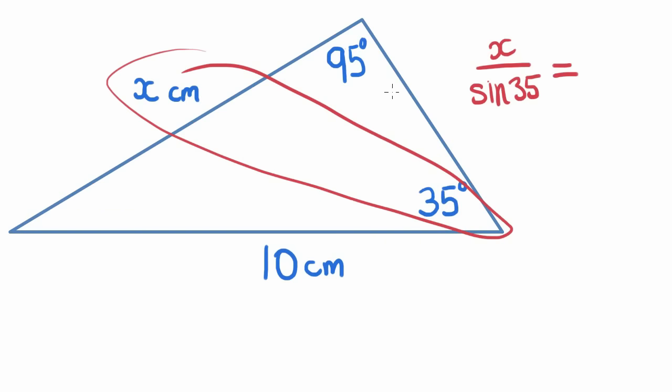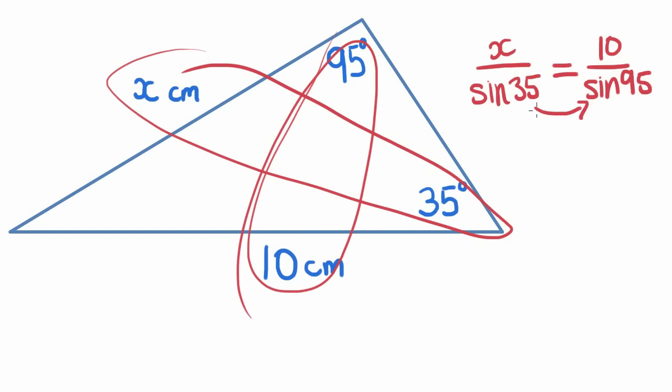Now the corresponding piece of information that I'm going to use, this other matching set that I have, I just need to put them in the same order. So I have sides over angles, so I'm going to put the side, 10, over sine of the angle, which is 95. And now to get the x by itself, I'm going to times the sine of 35 over to the other side of the equals. I have x equals 10 divided by sine of 95 times sine of 35. Enter that into your calculator and you get x equals 5.76 centimeters.